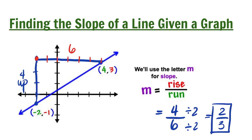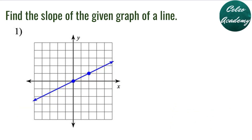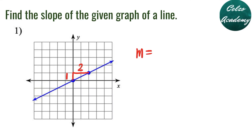If the graph is increasing from left to right, we are expecting a positive slope. Question number 1: find the slope of the given graph. The two points are already marked, so we just need to draw a right triangle. From the lower point, we go 1 unit up and 2 units to the right. Using rise over run, rise is 1 and run is 2, so the slope is 1 half.